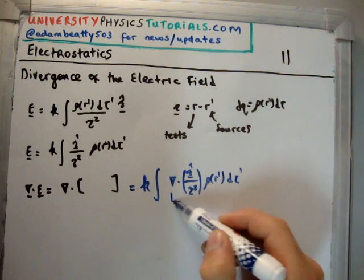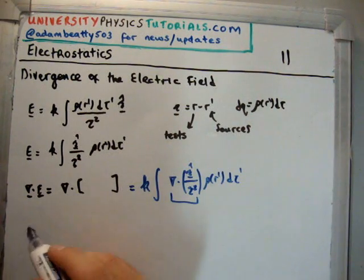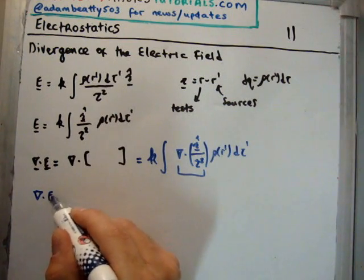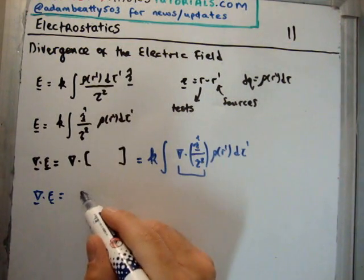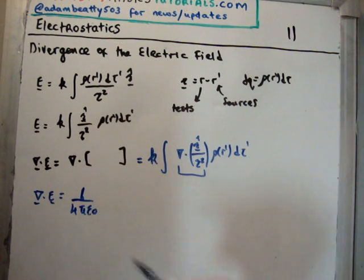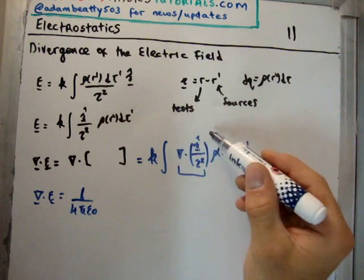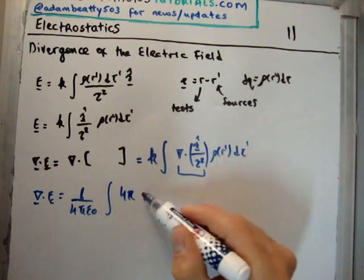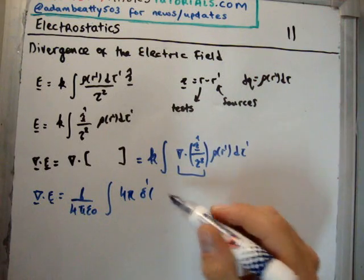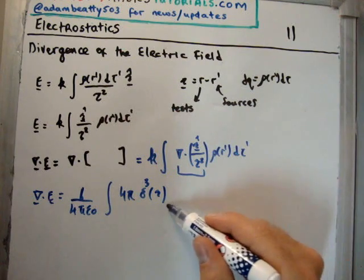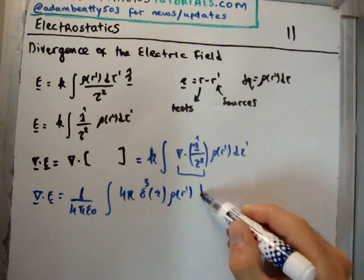So we know what the answer to this is, that's namely 4π times the three-dimensional Dirac delta function. So the divergence of the electric field is equal to k, which is 1 over 4π epsilon 0, then the integral of 4π times the three-dimensional Dirac delta function with respect to the separation vector, ρ of r prime, d tau prime.